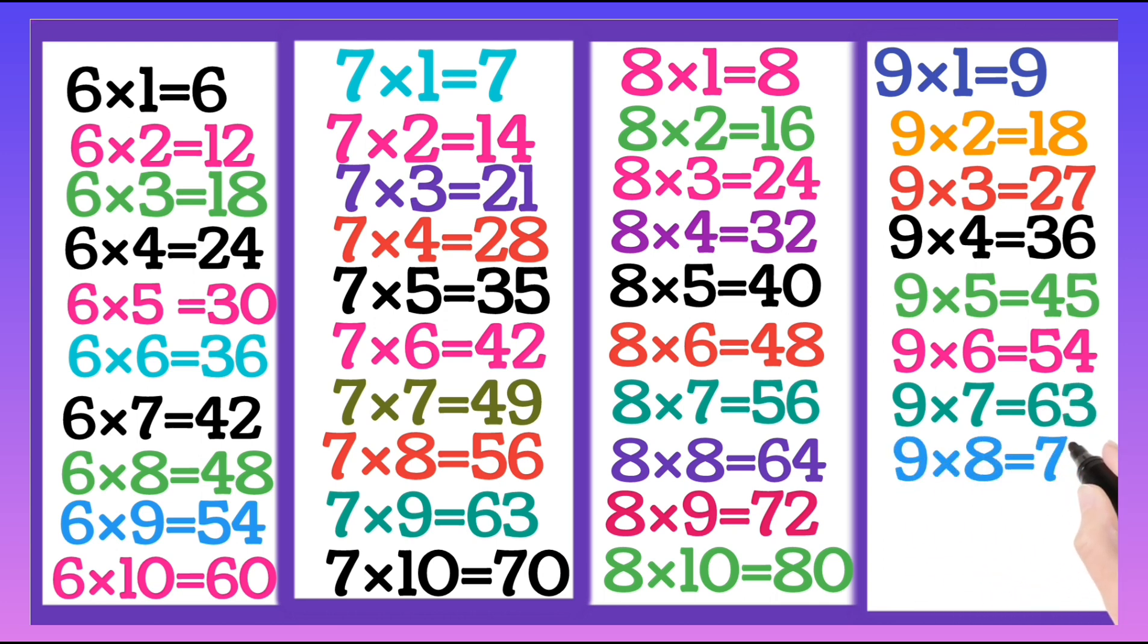9 eights are 72, 9 nines are 81, 9 tens are 90.